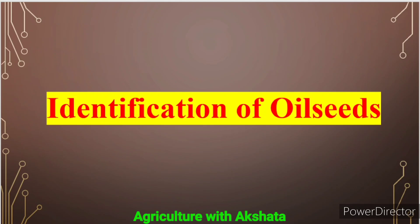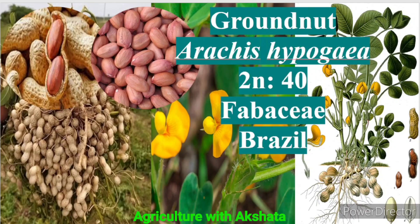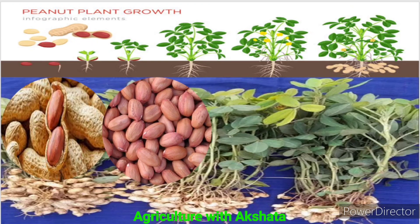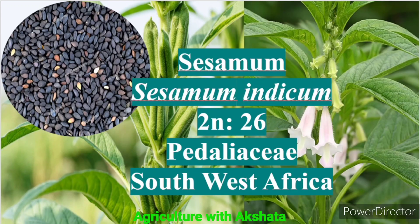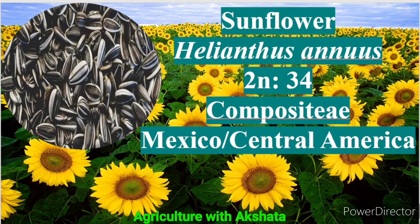Now let us see some of the oil seeds. Groundnut: Arachis hypogaea, 2n = 40, Fabaceae family, origin Brazil. Sesame: Sesamum indicum, 2n = 26, Pedaliaceae family, origin Southwest Africa. Sunflower: Helianthus annuus, 2n = 34, Compositae or Asteraceae family, origin Mexico or Central America.